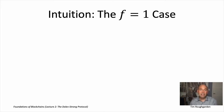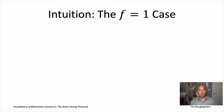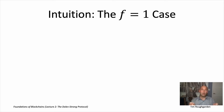In the last video we defined the Byzantine broadcast problem. You have N nodes, one of them is a designated sender. The sender has a private input they want to communicate to everybody else. A protocol solves Byzantine broadcast if it satisfies termination — all honest nodes running the protocol eventually terminate — agreement, where honest nodes always conclude with the same value, and validity, stating that if the sender is honest, that common value should be the one the sender intended to broadcast.